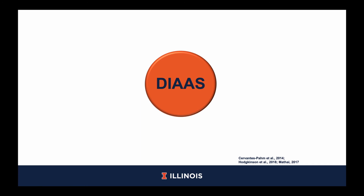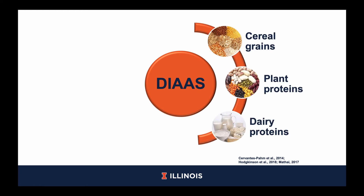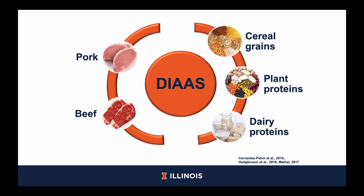Since the establishment of DIAAS in 2013, many proteins have been analyzed and assigned a DIAAS. For example, DIAAS has been determined for a number of cereal grains, plant proteins, and dairy proteins. In addition, DIAAS was determined for one muscle cut of beef that underwent a few different processing methods. However, pork has yet to be analyzed for DIAAS, and it is very important to analyze different processing methods that animal proteins may undergo because humans rarely eat raw meat.